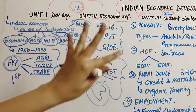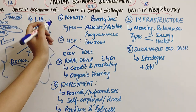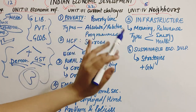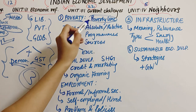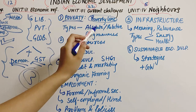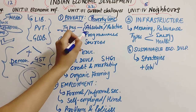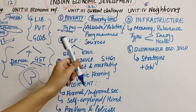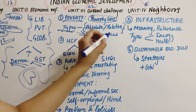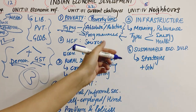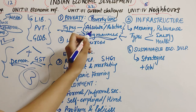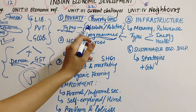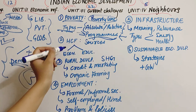Unit 3 is the most important unit for us, and I have highlighted in-depth important topics. The first chapter is Poverty. The most important topics are: first, the poverty line and how it is calculated; second, types of poverty — absolute and relative, and also chronic poverty; and third, poverty alleviation programs — what programs exist to reduce poverty. These three are the most important topics from the poverty chapter.